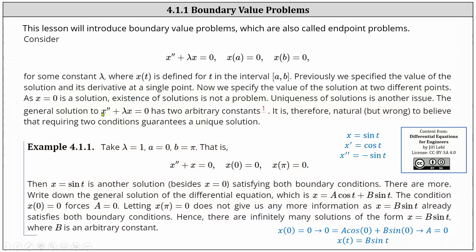The general solution to x double prime plus lambda x equals zero has two arbitrary constants. It is therefore natural, but wrong, to believe that requiring two conditions guarantees a unique solution. Let's take a look at two examples.